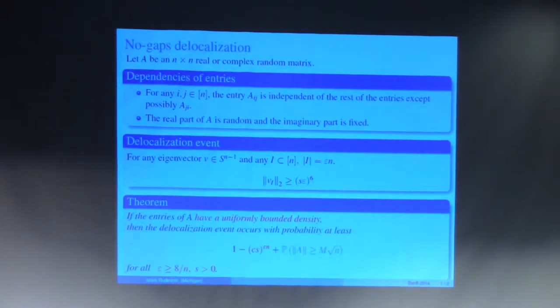If we drop the uniform bounded density assumption, we can prove essentially the same for general entries, only they have to be random, and we require that they are not contained in small disks, otherwise the matrix would be almost deterministic. The conclusion is the same: the delocalization event is likely if epsilon is at least some power of n.